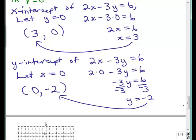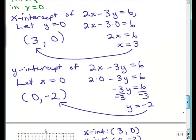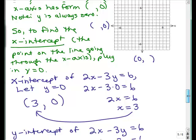The x intercept was 3, 0. And the y intercept was 0, negative 2. So, let's see what this graph looks like. Let's remember the equation. It was 2x minus 3y is 6.